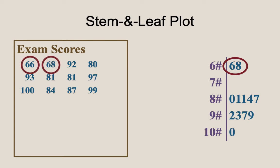In fact, the 68, or the 6-8, here refers both to the 66 and 68 in the data set. Each digit to the right, the leaves, represents one value in our data set.